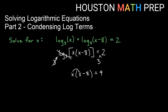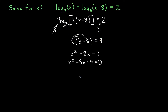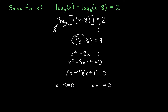Applying exponential base 3 to both sides, we get x times (x minus 8) equal to 3 squared, which is 9. Distributing gives x squared minus 8x equal to 9. Subtracting 9 from both sides gives x squared minus 8x minus 9 equal to zero. Factoring, we need things that multiply to give negative 9 and add to give negative 8 — that's negative 9 and positive 1. So (x minus 9)(x plus 1) equals zero, giving possible answers x equals 9 and x equals negative 1.